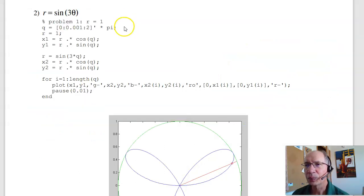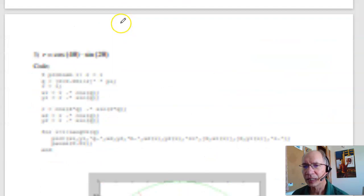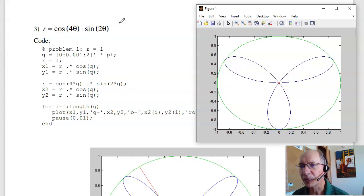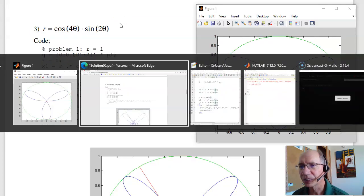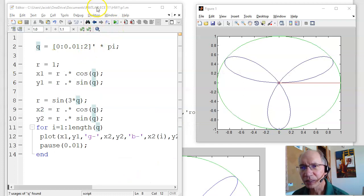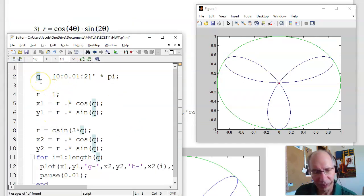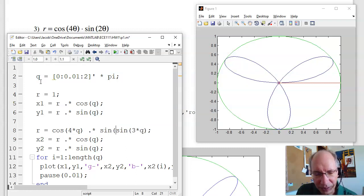Problem number three is a different one. Cosine of four theta times sine of two theta. So again, going back to the MATLAB script, and for those with a short attention span, cosine(4θ) dot times sine(2θ).